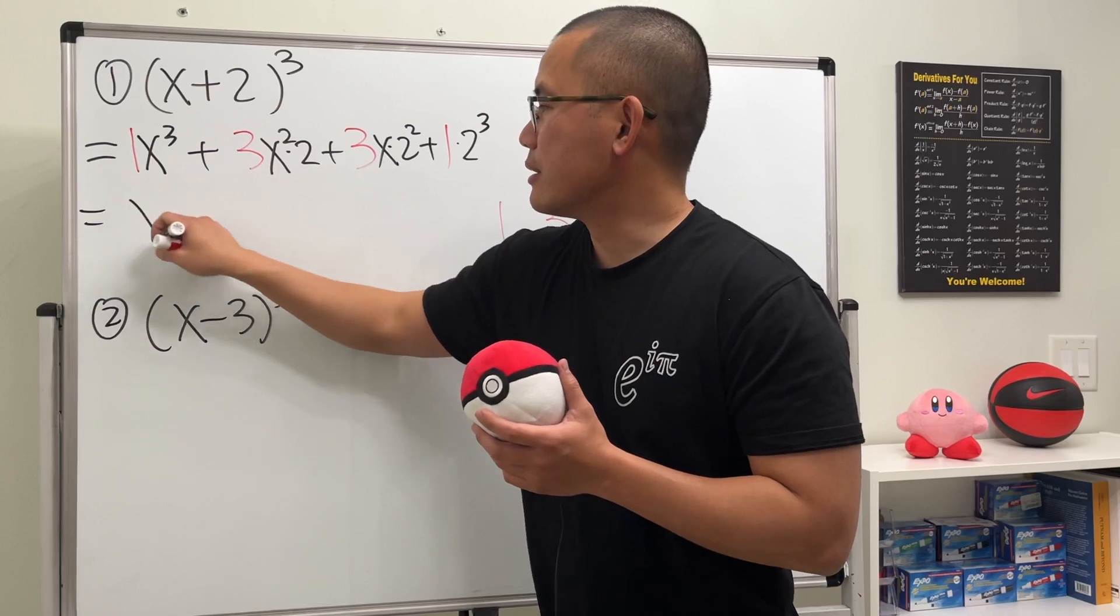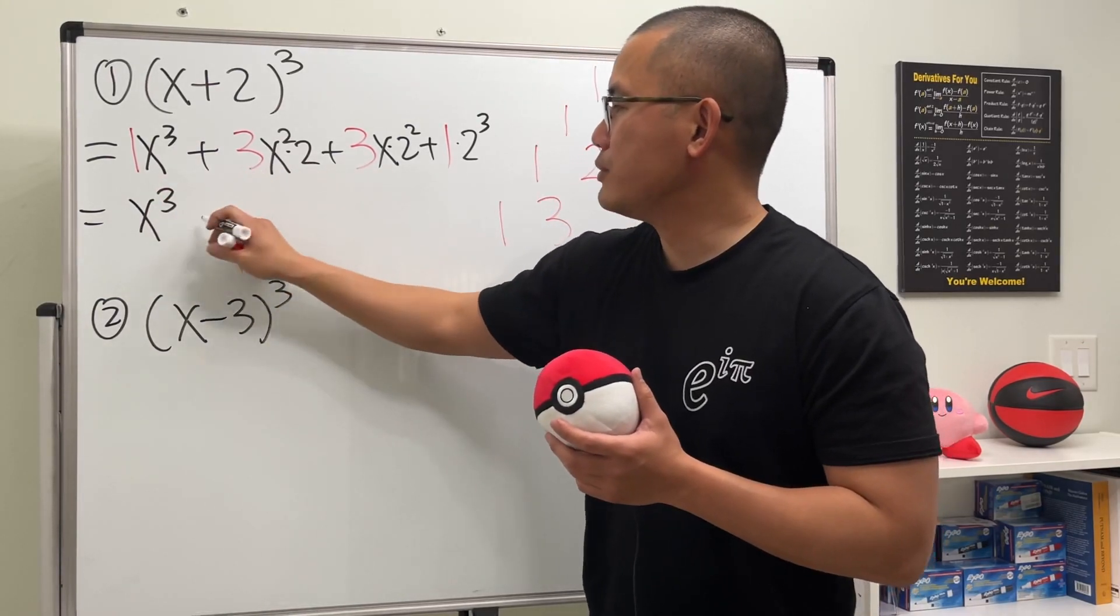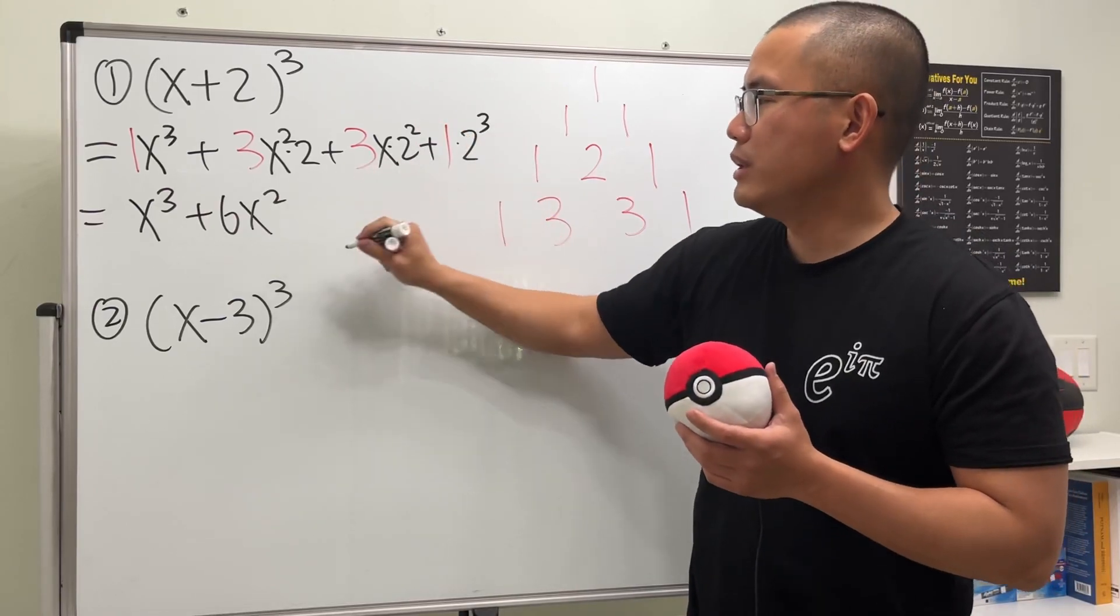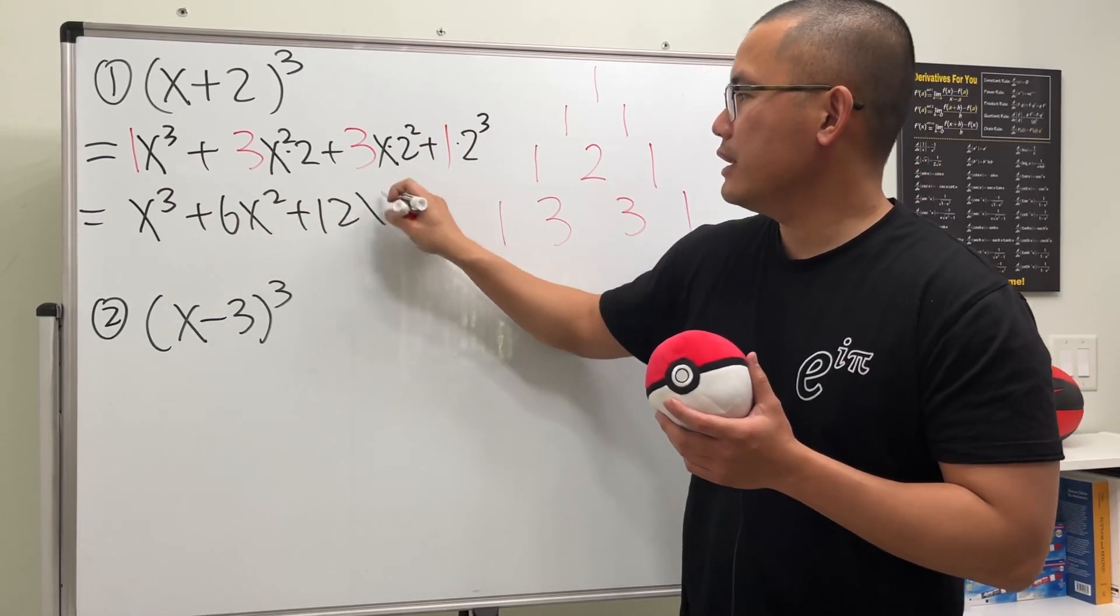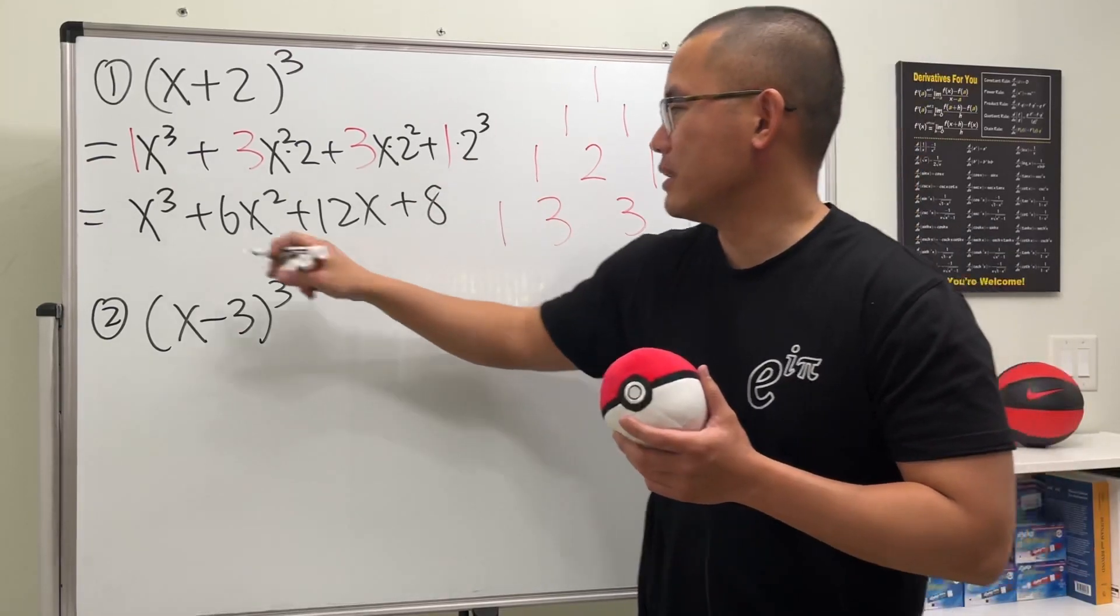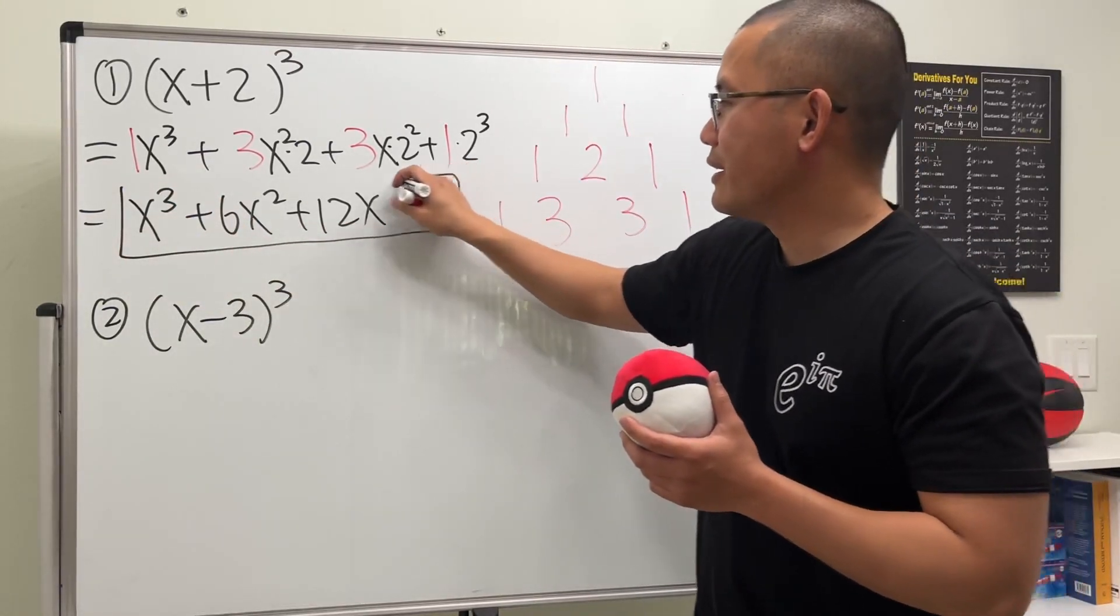And finally we just multiply things out here. We have just x to the third power, and then this is 2 times 3 so we have 6x square, and this is 4 times 3 which is 12x, and lastly 2 to the third power is 8 times 1, so this right here is it.